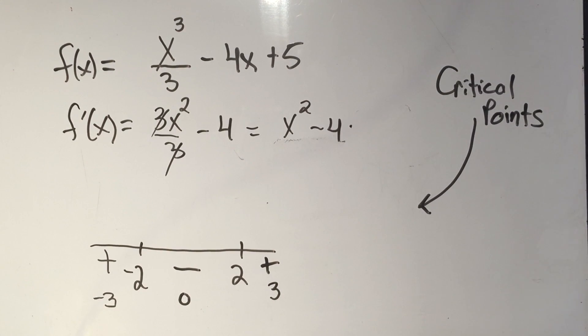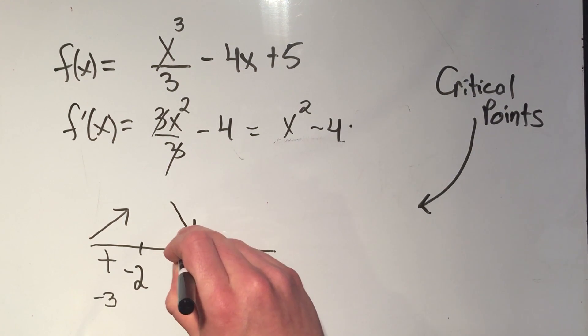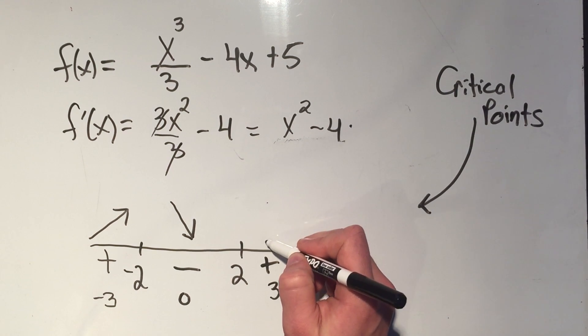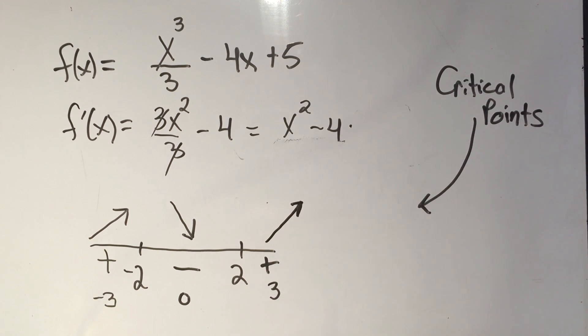Since derivatives give you the slope of the tangent line, before negative two, my slopes are positive. And if I have positive slopes of tangent lines, that means my function would be going up, it would be increasing. If I have negative slopes of tangent lines, that means my function would be going down, or it would be decreasing. And if I have, again, positive slopes of tangent lines, that means my function's going up, it's increasing.